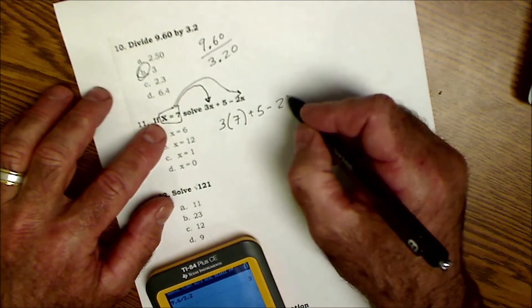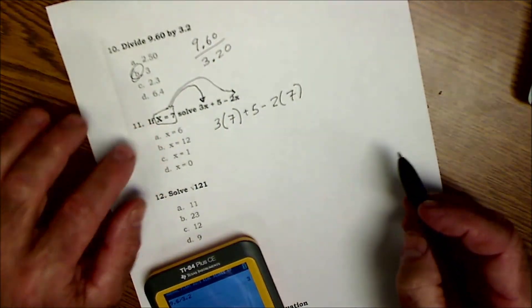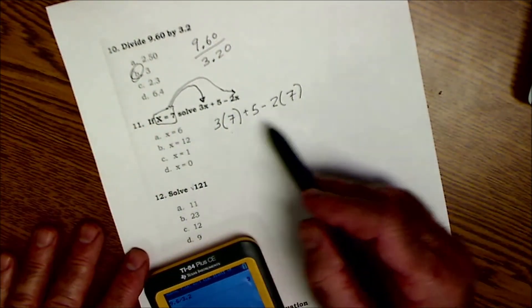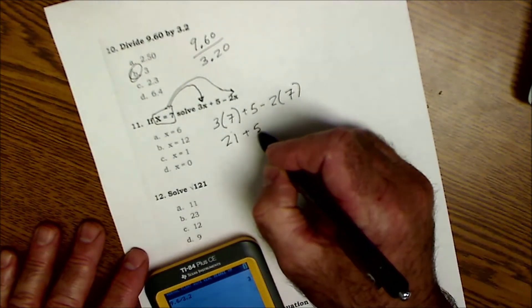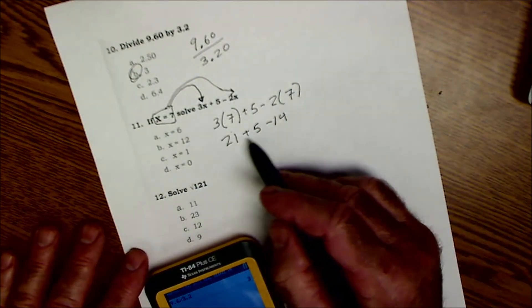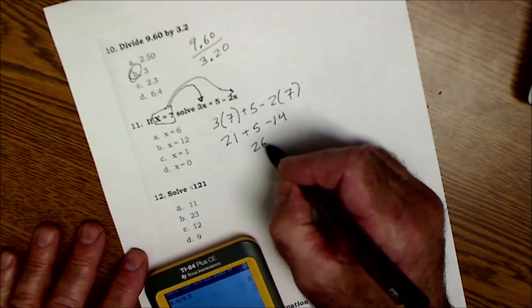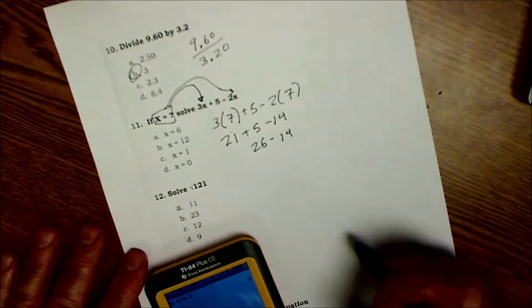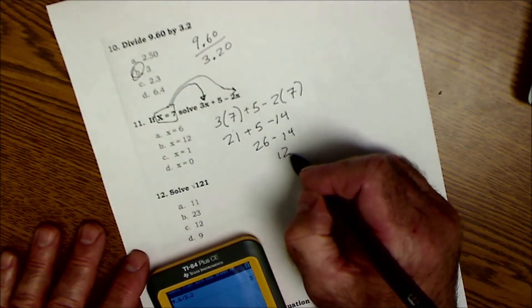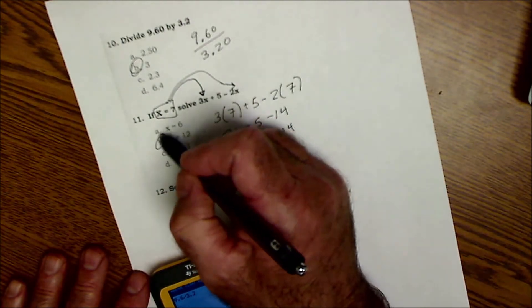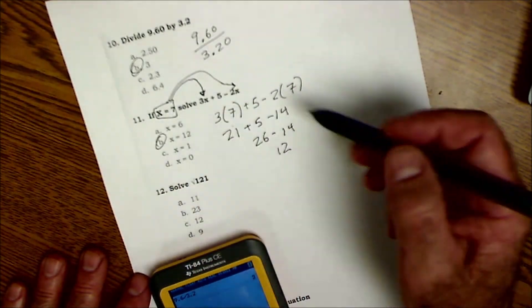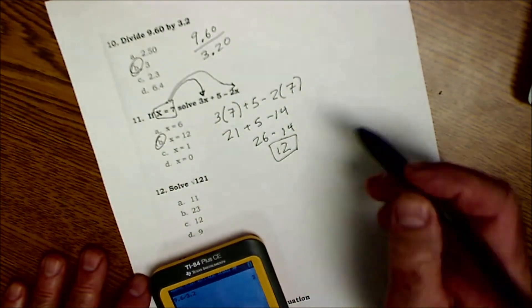21 plus 5 is 26, minus 14 is 12, so my answer is 12. The answer is actually 12. X isn't equal to 12, x is equal to 7, but your answer is 12.